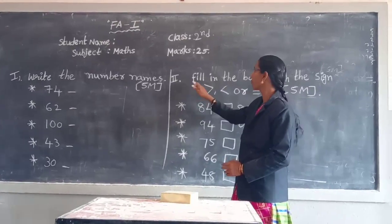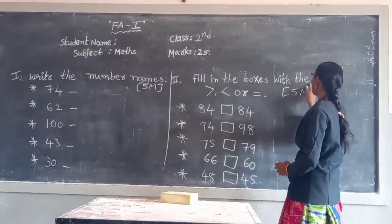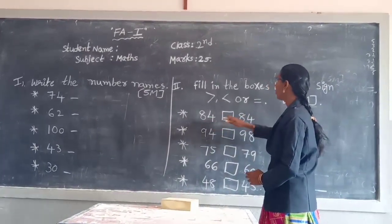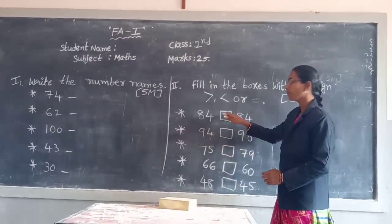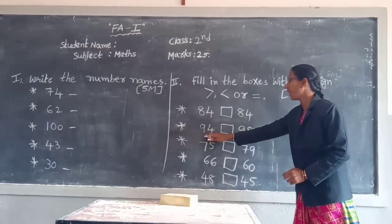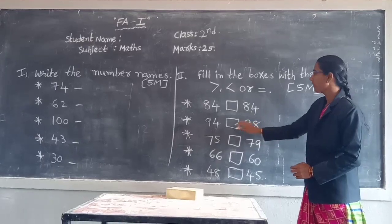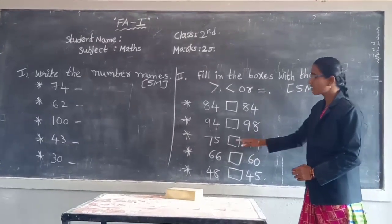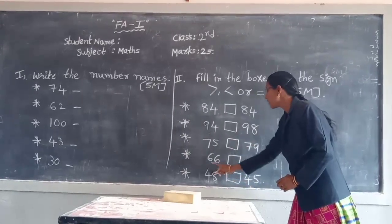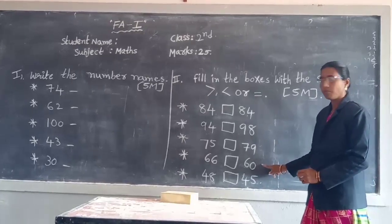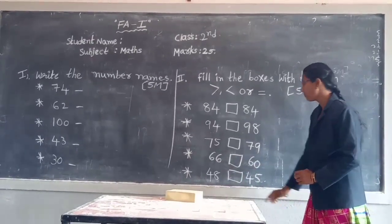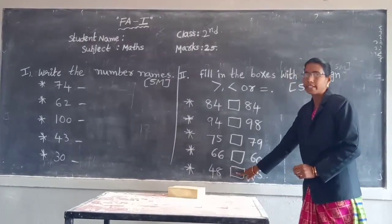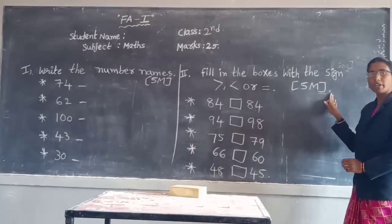Next, second means: fill in the boxes with the sign — greater than, less than, or equal. Ninety-four and ninety-four, which symbol? Write in the box. Next, ninety-four and ninety-eight, which symbol? Write in the box. Seventy-five and seventy-nine, which symbol? Write in the box. Sixty-six and sixty, which symbol? Write in the box. Last one: forty-eight and forty-five, which symbol? Write in the box. Total five marks.